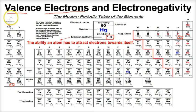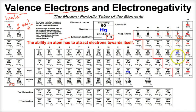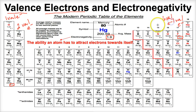In group one, all of these atoms have one valence electron in their outermost energy level. In group two, these atoms all have two valence electrons in their outer shell. In group 17, these atoms all have seven valence electrons. Next door, in group 16, they all have six valence electrons, and group 15 atoms typically have five valence electrons. The noble gases — helium has two valence electrons and all the others have eight.